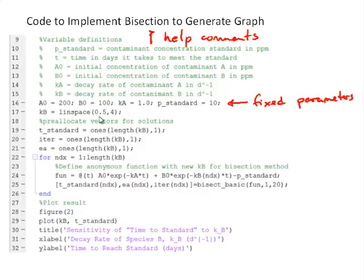And then the parameter that we're studying is KB. So here we'll set up a vector of KB values.